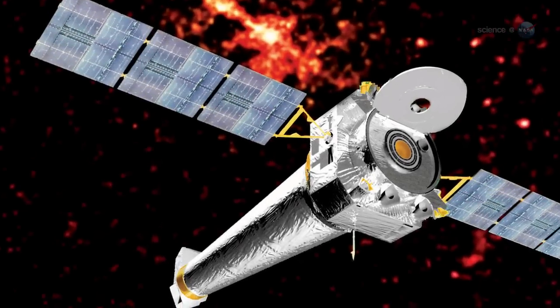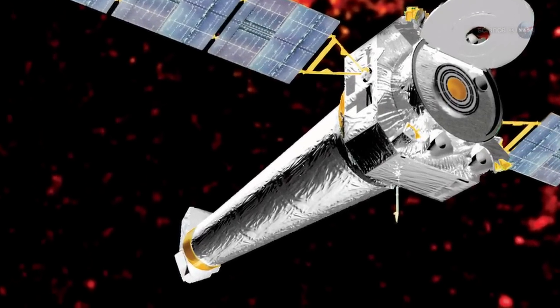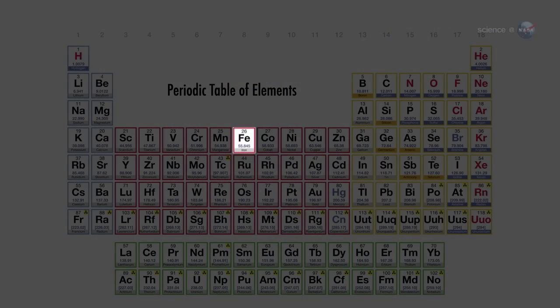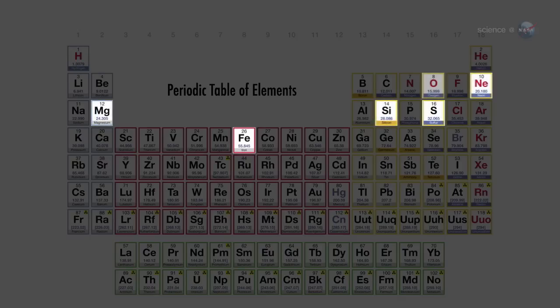The researchers scanned Cas A using Chandra's advanced CCD imaging spectrometer. This revealed concentrations of iron, sulfur, silicon, magnesium, neon, and oxygen.